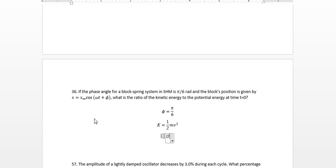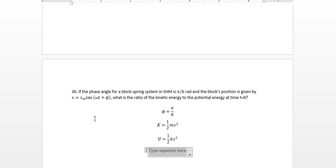And what's the potential energy? Potential energy is one half kx squared. And we're looking for the ratio between kinetic and potential. And we also don't know k, but we know that omega is the square root of k over m.